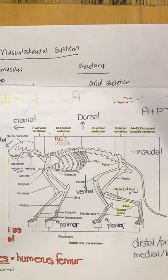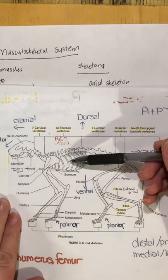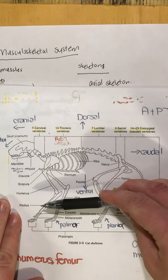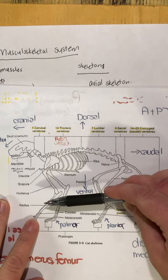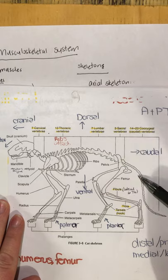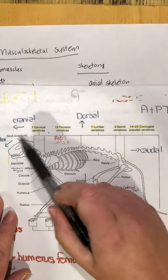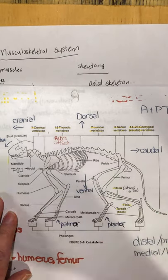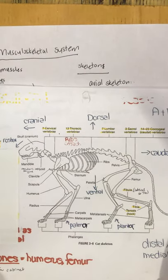We also have medial and lateral — lateral is more towards the side (lateral means side), and medial is more towards the midline. On the head itself, we also have the term rostral, meaning towards the nose.